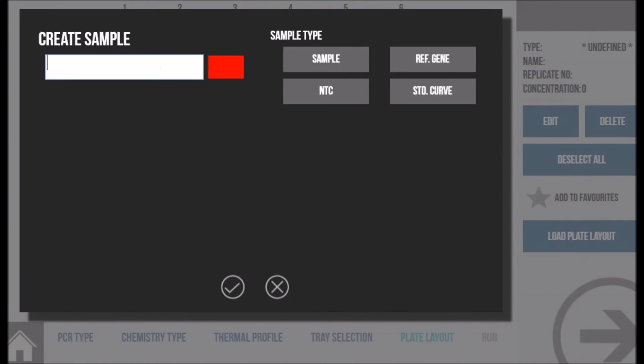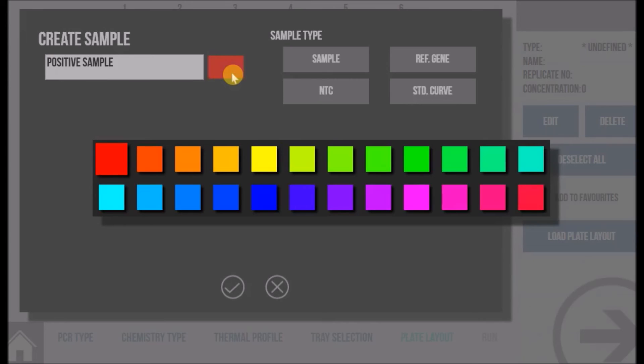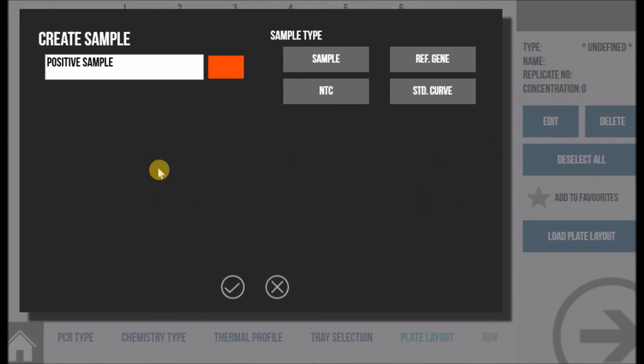You can enter the name here. You can choose a color for your sample, which is the color that it will be displayed in on the amplification graph, and also specify your sample type.